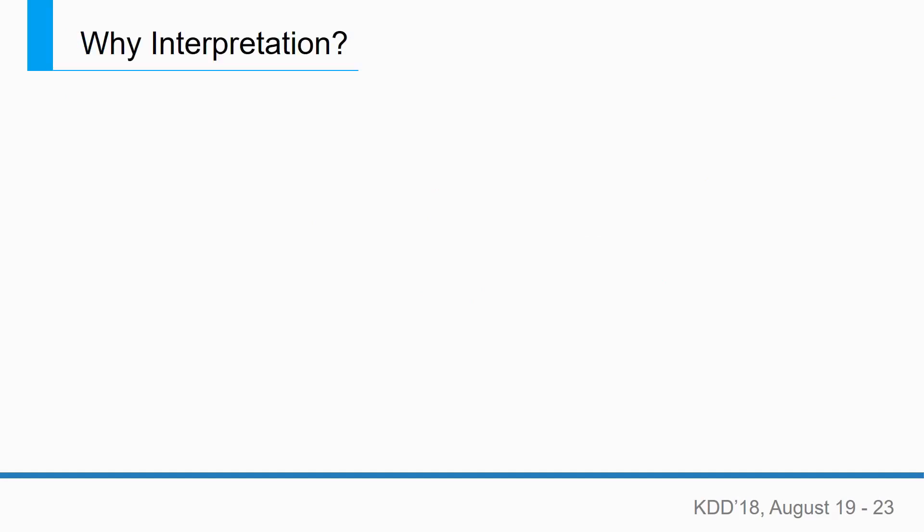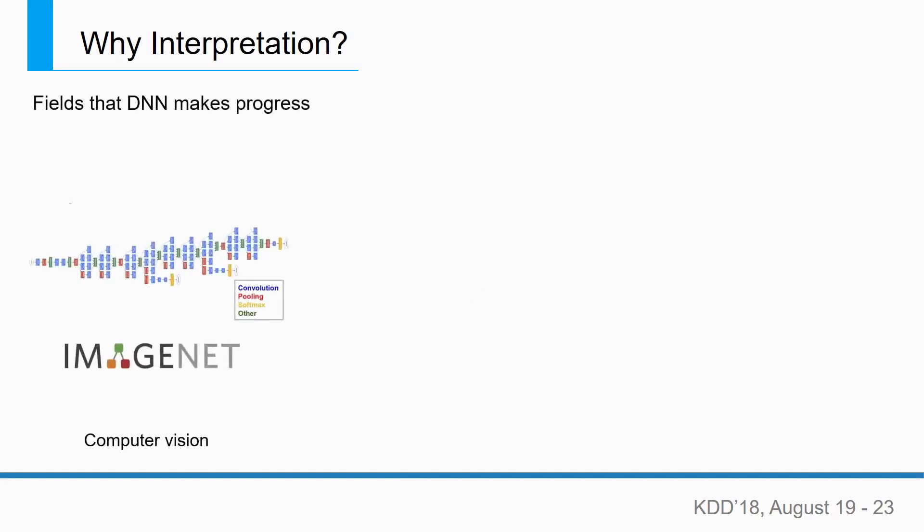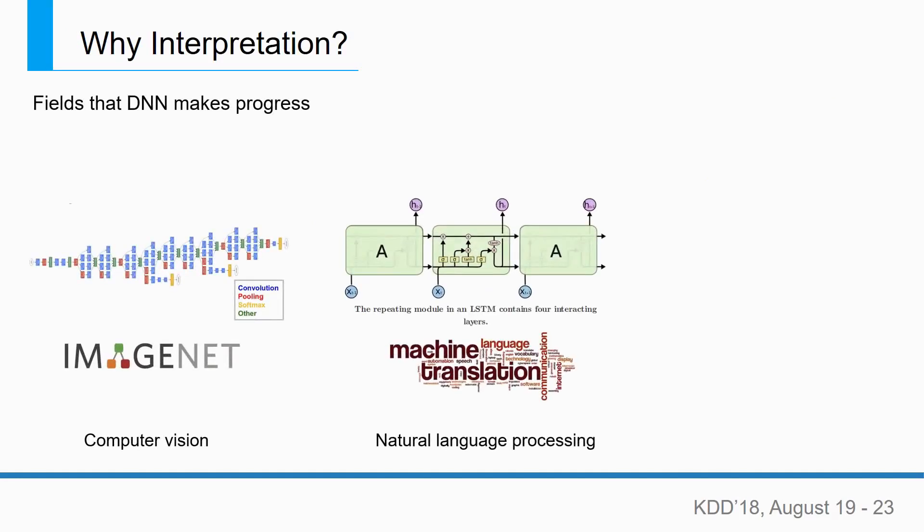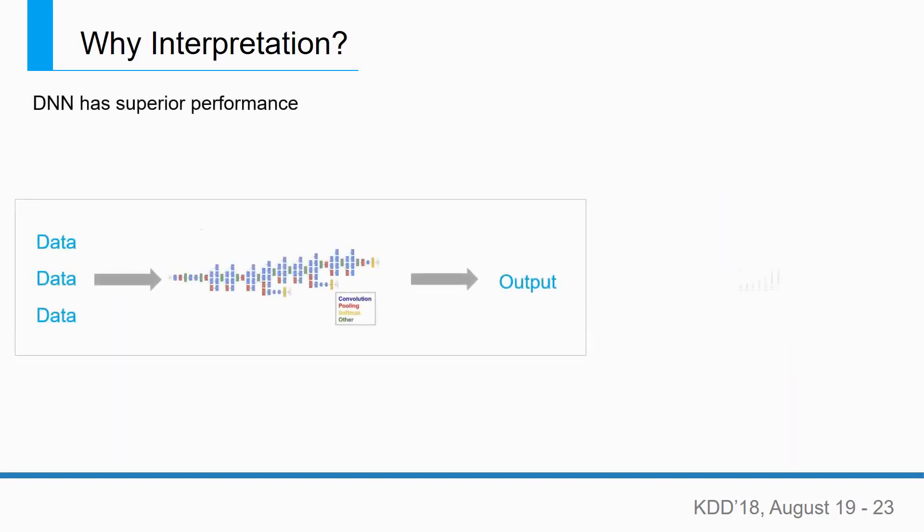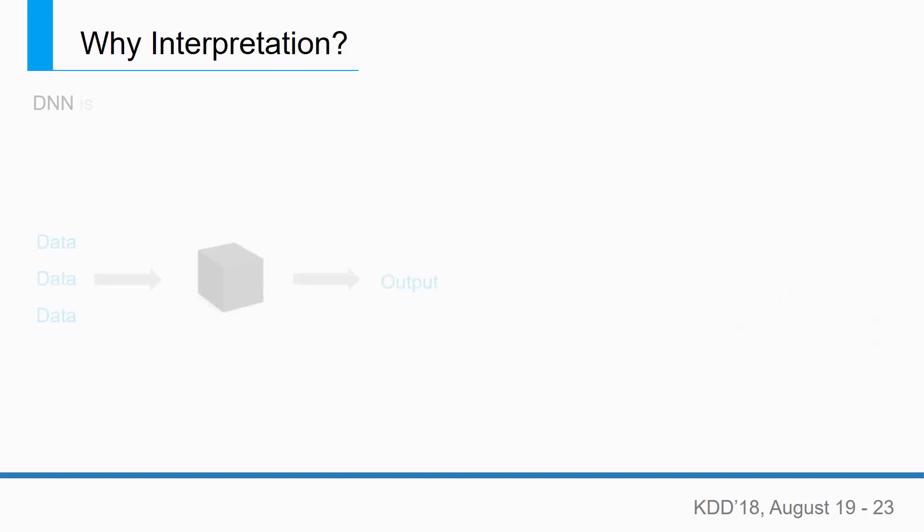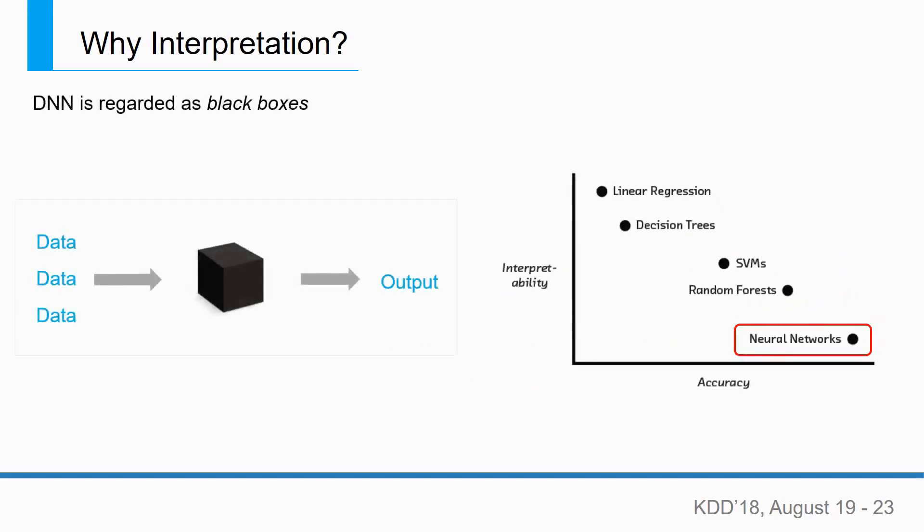Let's start with this question: Why do we need interpretation? Deep neural networks have made dramatic progress in a wide range of areas such as computer vision, natural language processing, and recommender systems. Despite superior performance, deep neural network models are often regarded as black boxes since they cannot provide explanations on how a certain prediction is made.